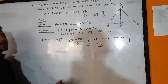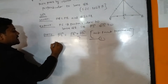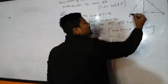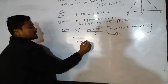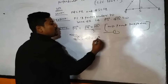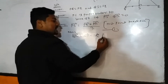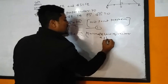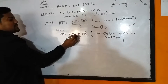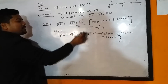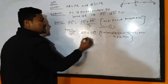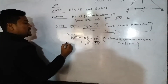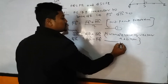Now take QR vector. By the triangle law of vector addition, QR vector equals QP vector plus PR vector. Since QP is the negative of PQ, we can write QR vector equals PR vector minus PQ vector. Call this equation 2.